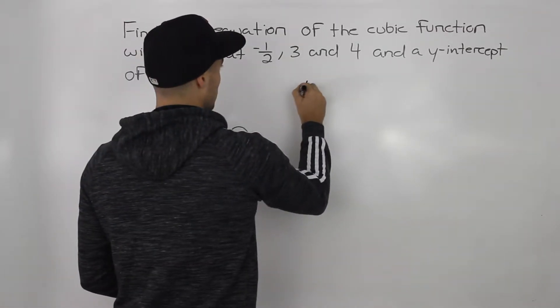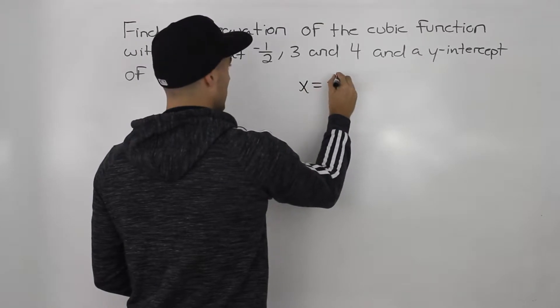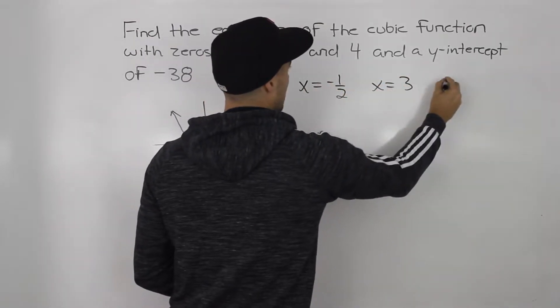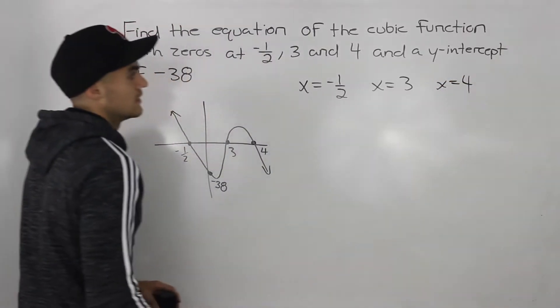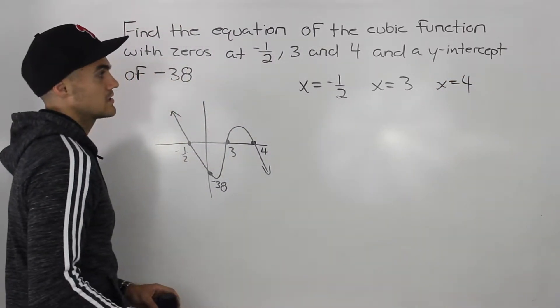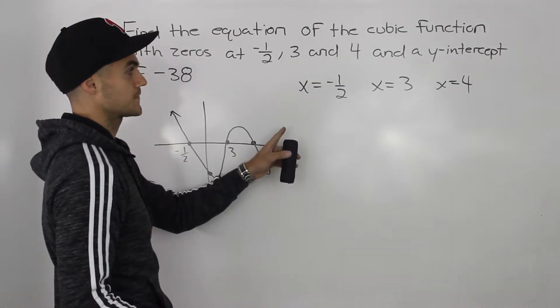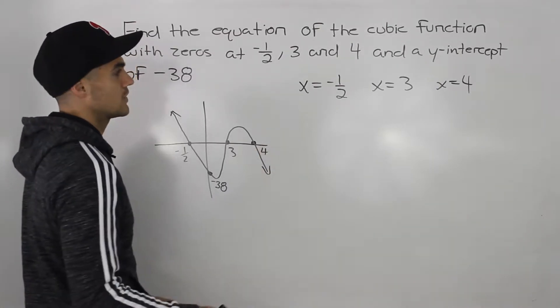So we're given an x-intercept of negative one-half, we're given an x-intercept of three, and an x-intercept of four. So what we can do is we can find what the factors are going to be in the equation.